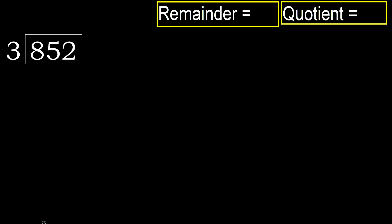852 divided by 3. 8 is not less, therefore start with 8. 3 multiplied by which number is nearest to 8 but not greater? 3 multiplied by 3 is 9 — 9 is greater. 3 multiplied by 2 is 6 — it is not greater. 8 minus 6 is 2.